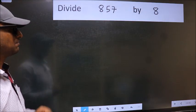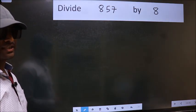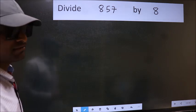Divide 857 by 8. To do this division, we should frame it in this way.